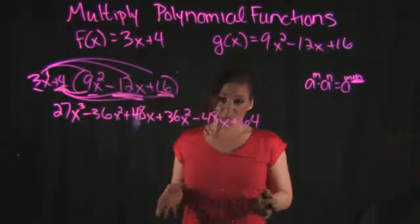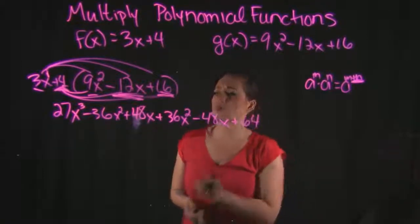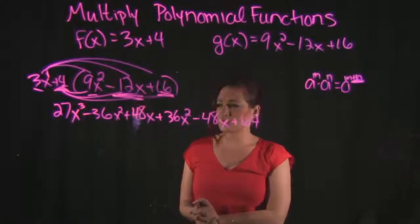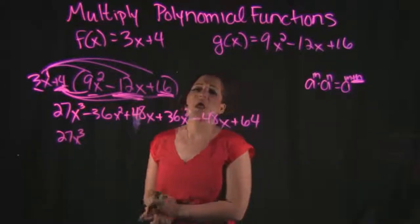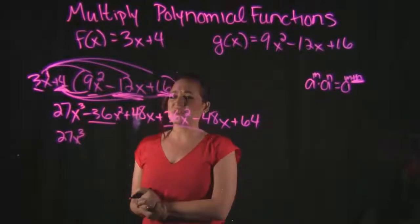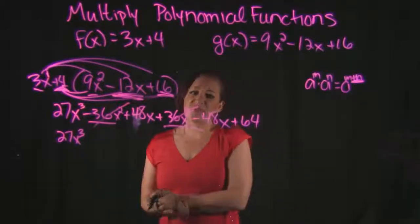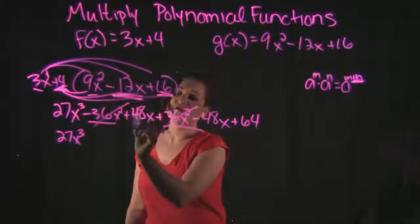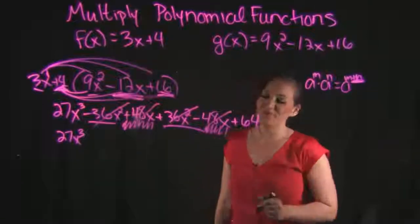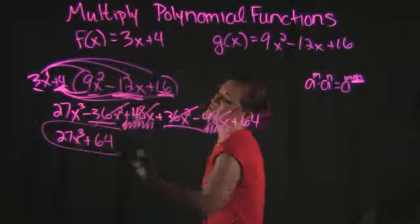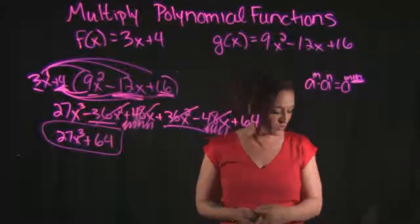Now we're done with the multiplication part, but we do need to clean up by combining like terms in descending order. We drop down 27x cubed — that is the only cubed term. Combining our x squared terms: negative 36x squared plus 36x squared — those cancel out. Our x terms: 48x and negative 48x — those cancel out as well. Which means the only thing we have left is 64, with no other number to combine with.